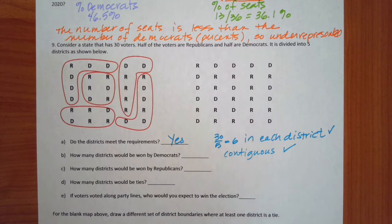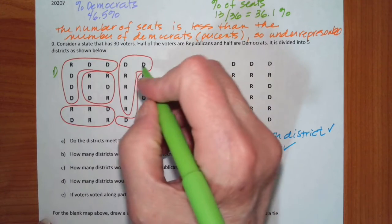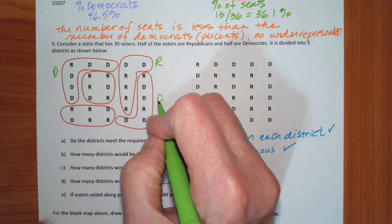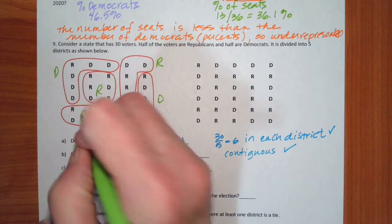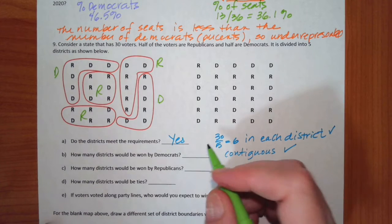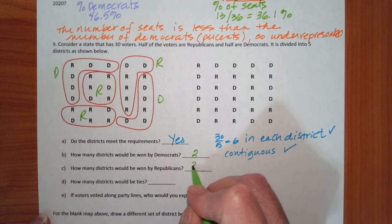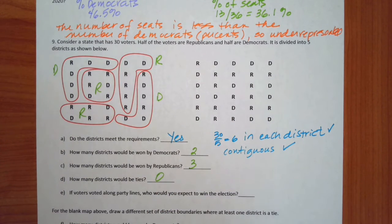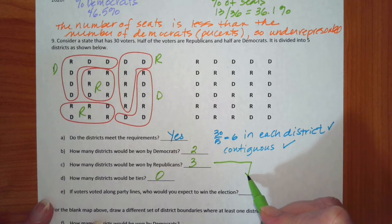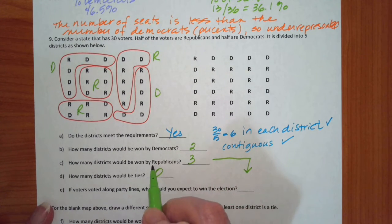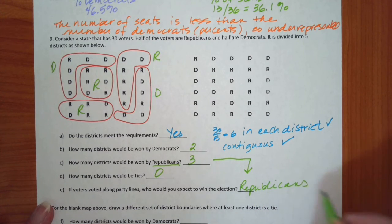So how many are won by Democrats? Well, let's see, I'm just counting them up. This is Democrat, this is Republican, this is Democrat, this is Republican, and this is Republican. So there are two that are Democrat, three that are Republican, and zero are ties. So if they vote along party lines, it's going to be the Republicans who will win the election.